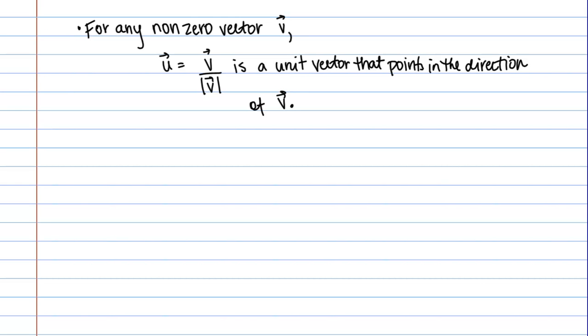First of all, what are we really doing here? I have some vector u and I'm saying that's defined as vector v divided by the magnitude of vector v. Another way I could write this, just algebraically splitting it up, is 1 over the magnitude of vector v times vector v.